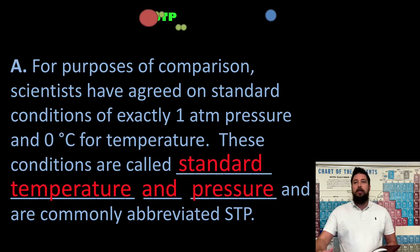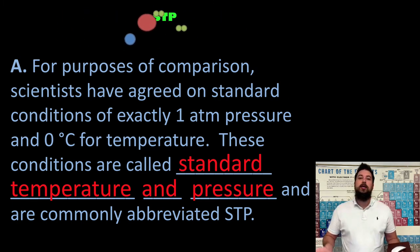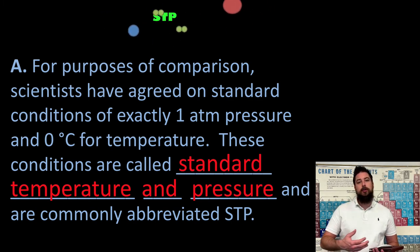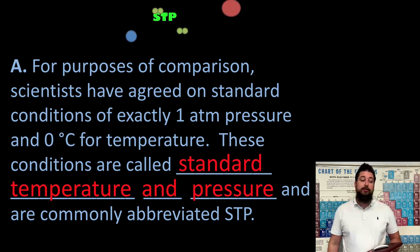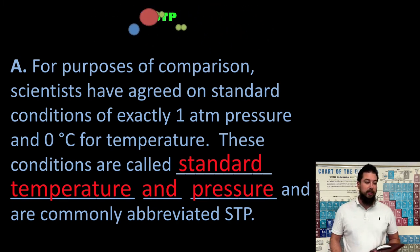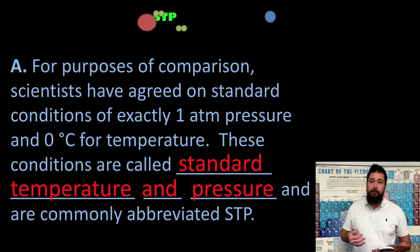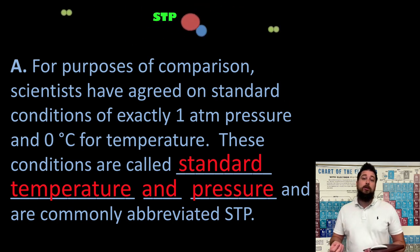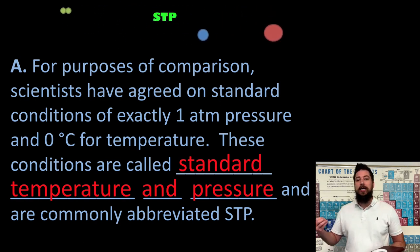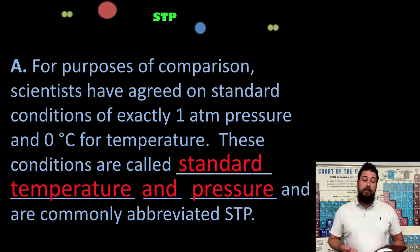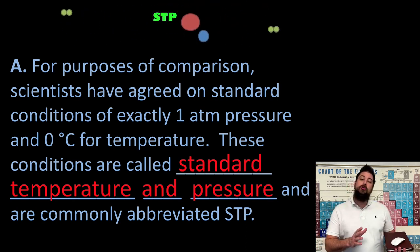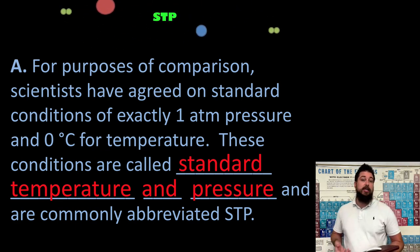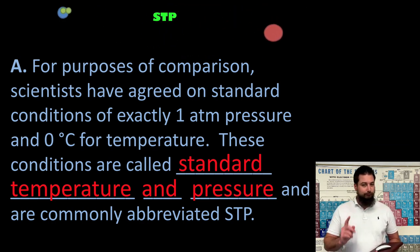When doing scientific experiments, we want to keep certain things constant. What's been agreed upon in the scientific community is that one atmosphere of pressure and zero degrees Celsius is considered standard temperature and pressure, or STP. We'll be referring to this a lot — if a problem states that something is occurring at STP, that means one atmosphere of pressure and zero degrees Celsius. Keep these terms in mind as we move forward with gases.